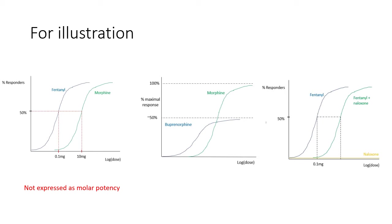Now let's discuss efficacy. I tend to think of efficacy as a phenomenon that describes the entire in vivo response rather than a single drug-receptor interaction. Efficacy is defined as a measure of the drug's propensity to elicit a response once bound to its receptor, and that is reflected by the height of a dose-response curve. For example, looking at the graph in the middle of the screen, we can see that morphine has greater intrinsic activity than buprenorphine.